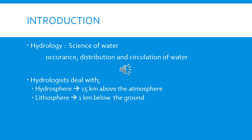Let's start with the introduction to hydrology. Hydrology is the science of water — it covers the occurrence, distribution, and circulation of water. We are going to consider how water is distributed, how it circulates, and occurrence such as precipitation, distribution to lakes and rivers via surface flow or groundwater and subsurface flows.